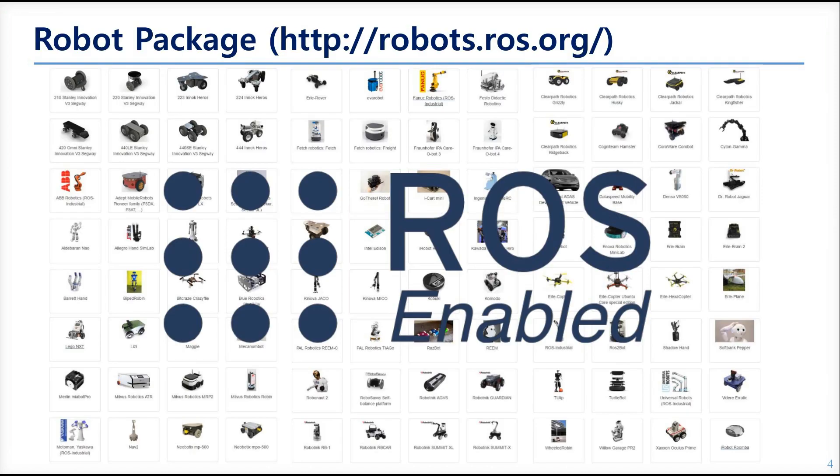What we see first is the robot packages. There are lots of mobile robots, manipulators, and mobile manipulators, which is a mixed one, and social robots as well. And the number is about 90. You can check the details in the link above.